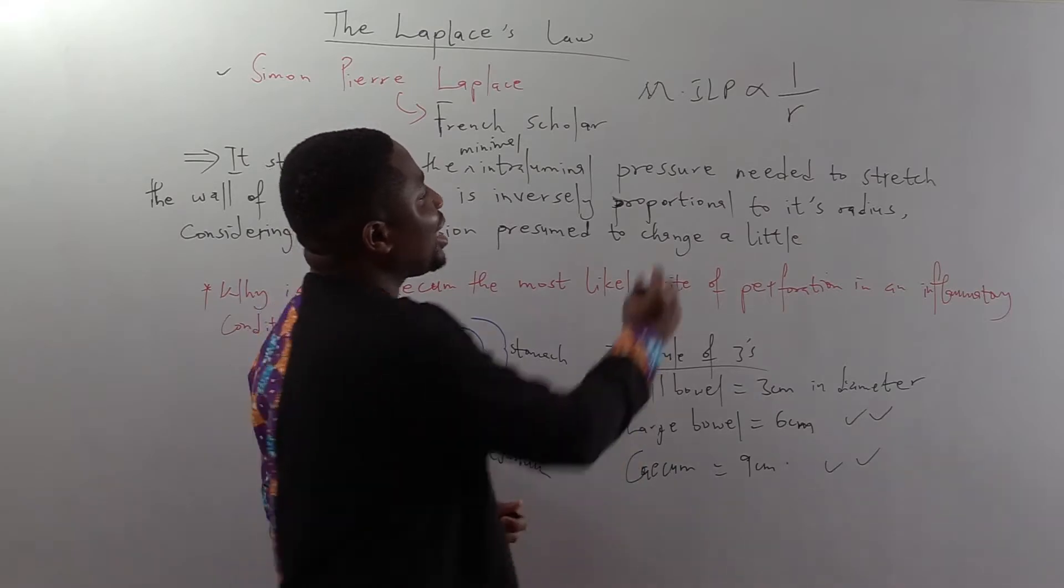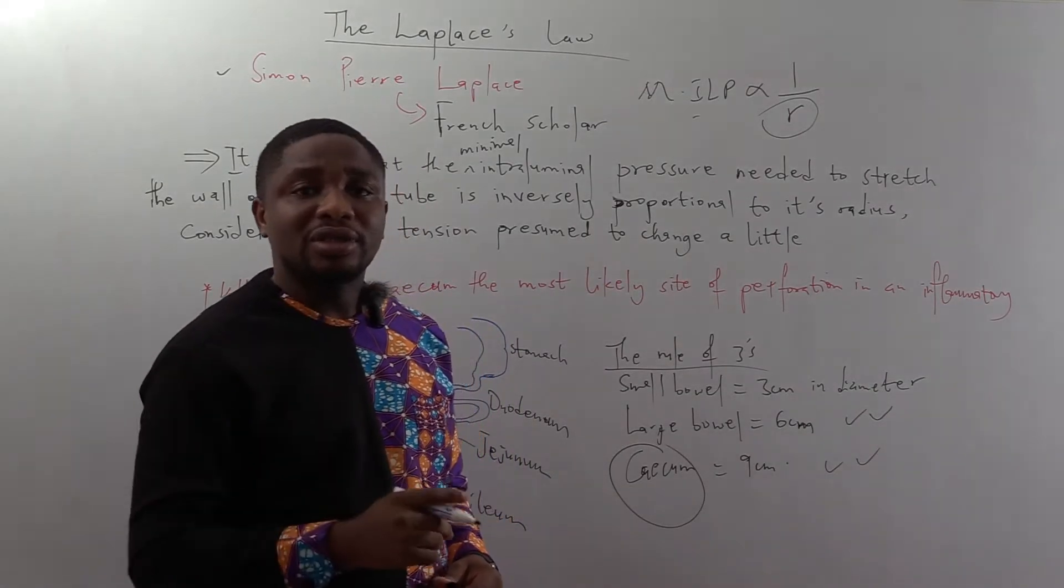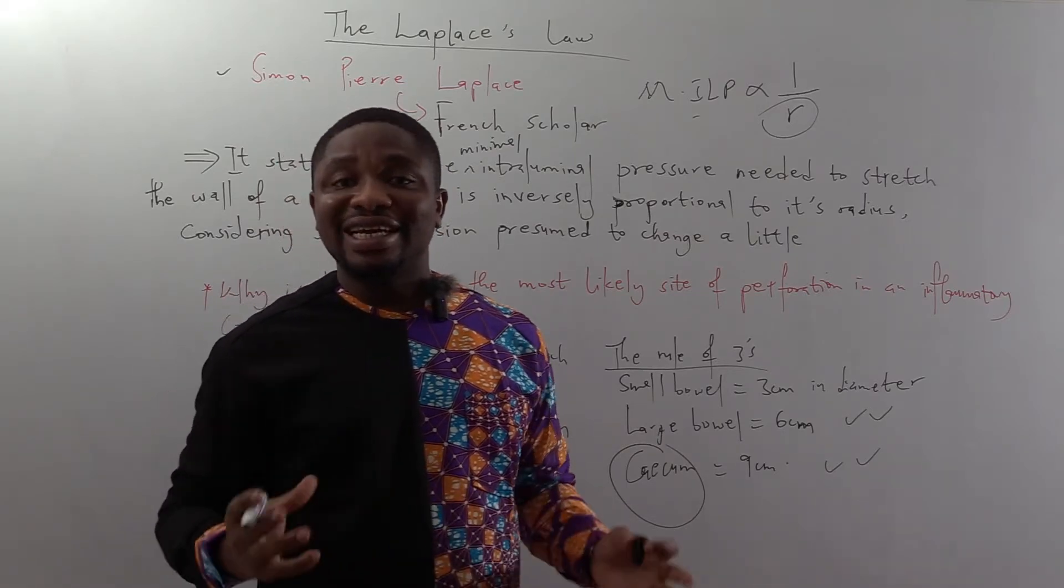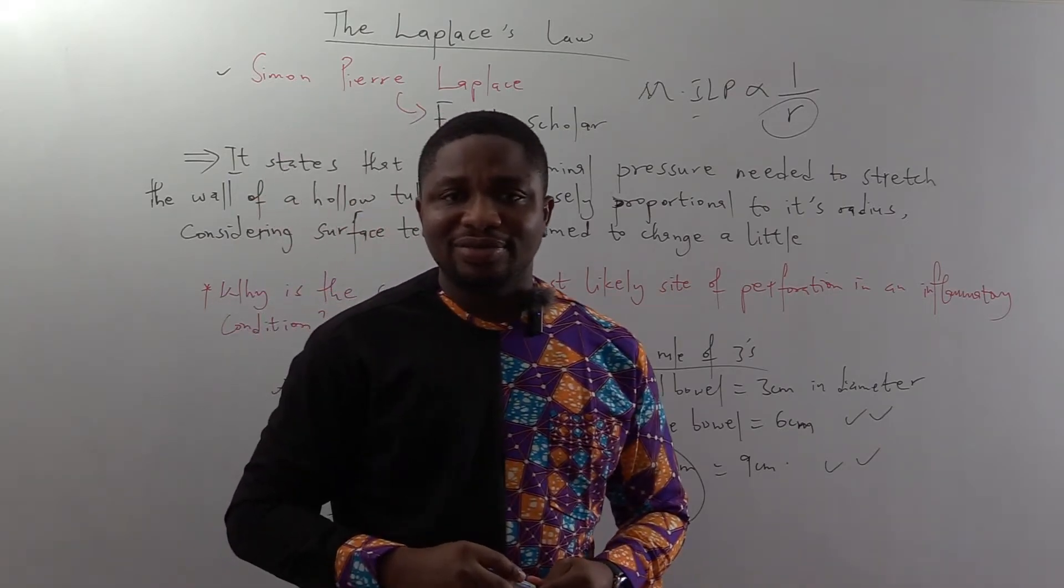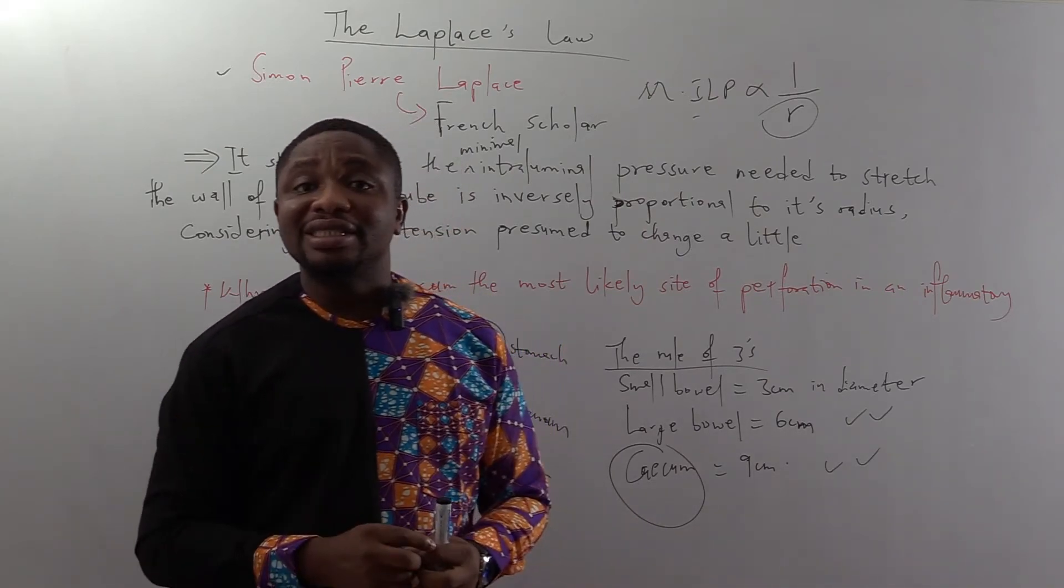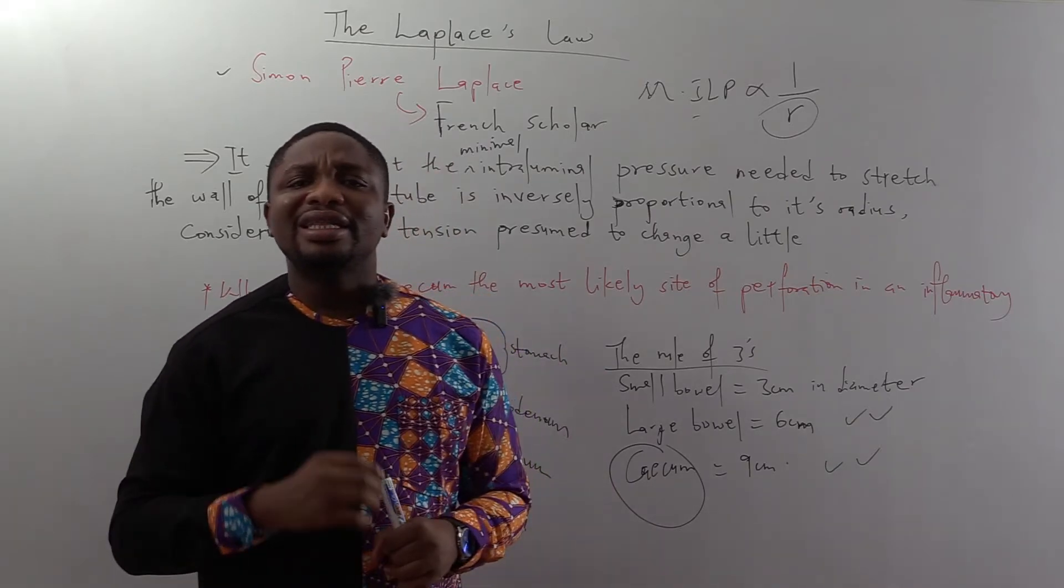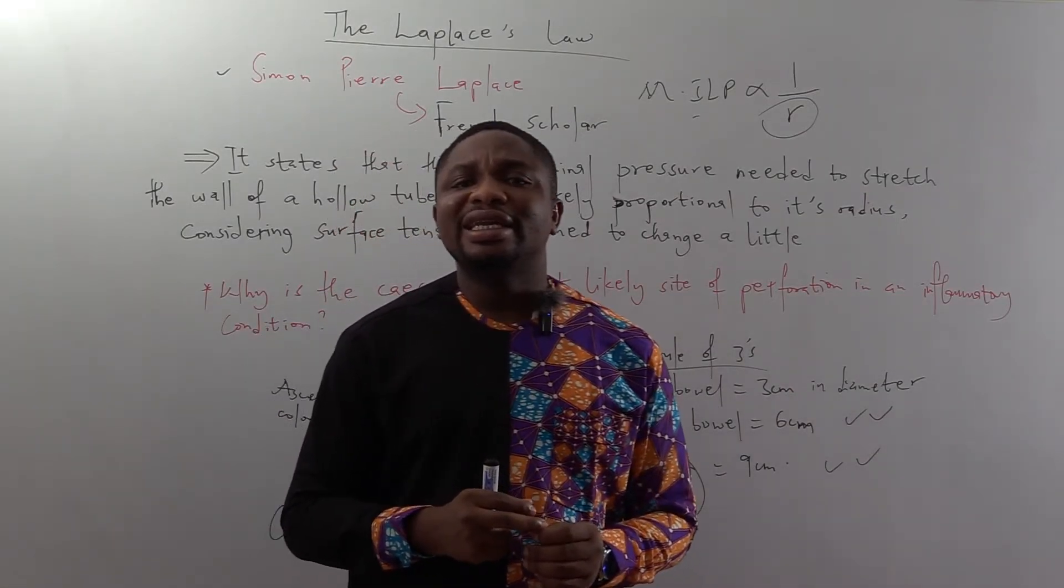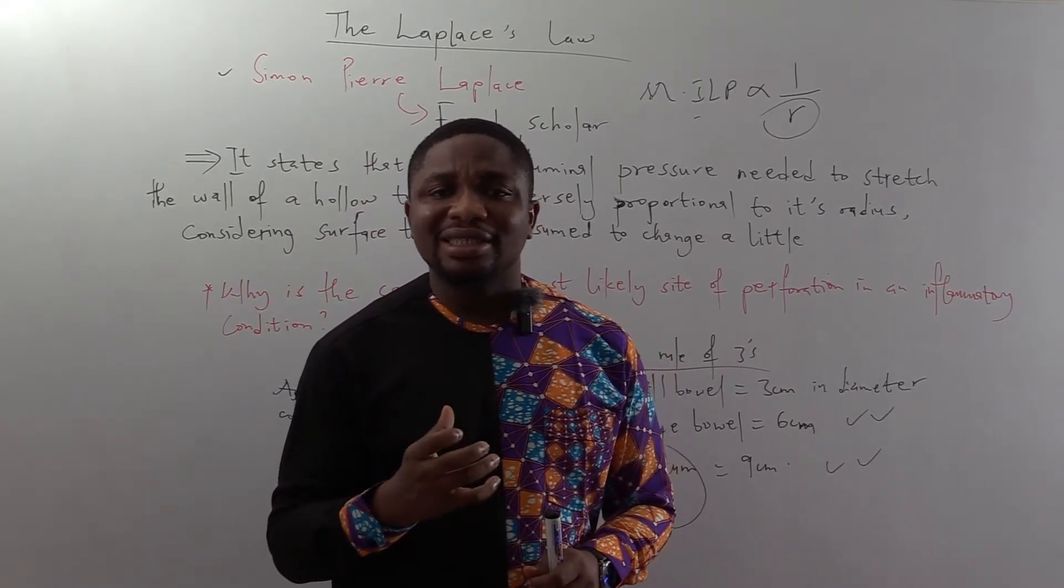So if you use this formula, you realize that the cecum will require the most minimal interluminal pressure to distend or stretch each wall. So if the pressure in the lumen along the bowel is the same in an inflammatory condition, then the most minimal will be needed in the cecum to stretch the cecum.